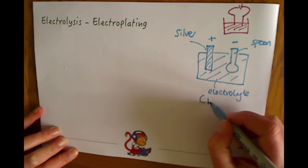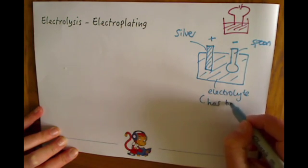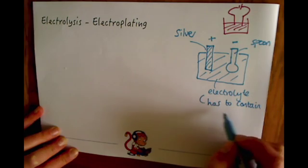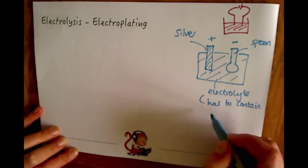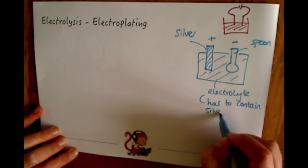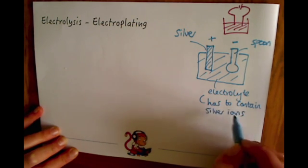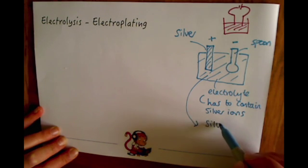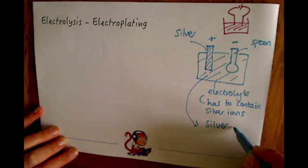So it has to contain in this case silver ions. So the electrolyte has to contain silver ions in this case. So it could be something like silver nitrate that you could use as the electrolyte to plate the spoon in silver.